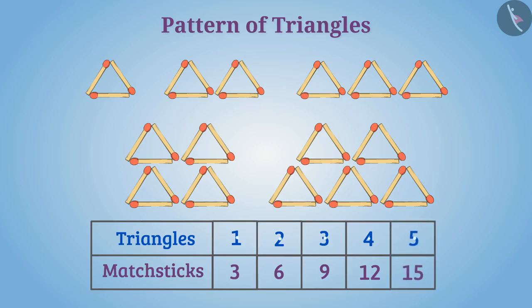Look at the number of triangles written in the table and the number of necessary matchsticks for them. Can you establish any relationship between them? By looking carefully you will notice that the number of matchsticks is three times the number of triangles.